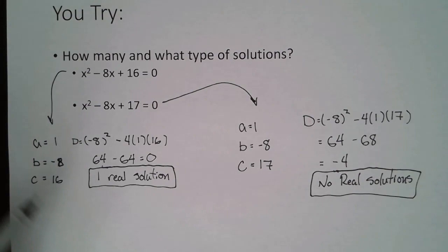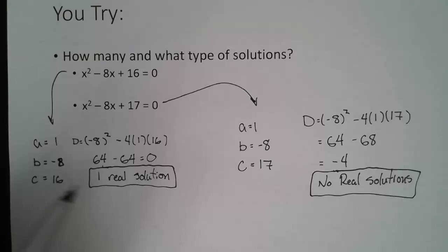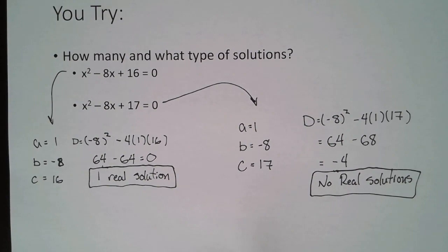All right. This is what you should have got for these two U-try examples. We have ABC values listed and then I plugged those into the discriminant formula. Here we have 0, so that's one real solution. And here we have negative 4, so that's no real solutions.